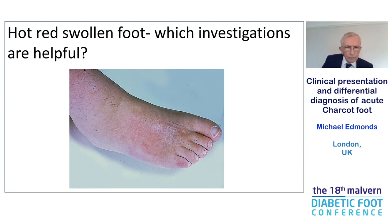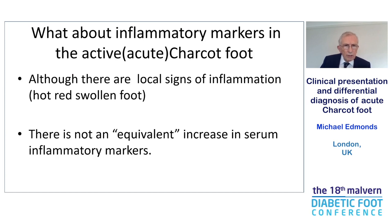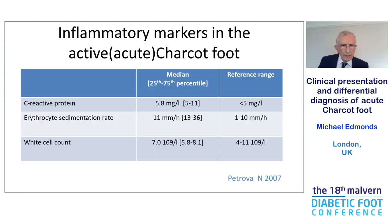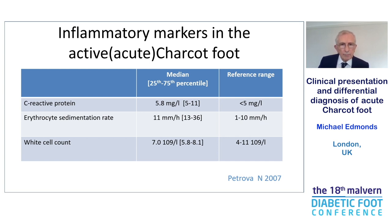So you've got the hot red swollen foot, you've done the history and carried out examination. What about inflammatory markers in the acute Charcot foot? Although there are local signs of inflammation, there is not an equivalent increase in serum inflammatory markers. In the study from Nina Petrova of 35 patients presenting with acute Charcot foot, the median C-reactive protein was only 5.8 (range 5 to 11, reference range less than 5), the ESR median was 11, and white cell count was within normal range. So these are not helpful.